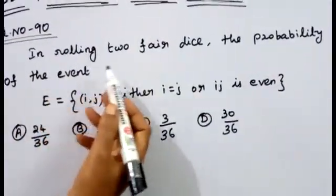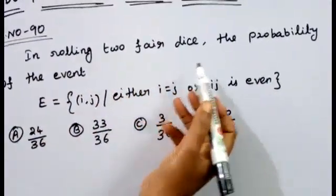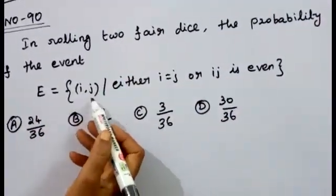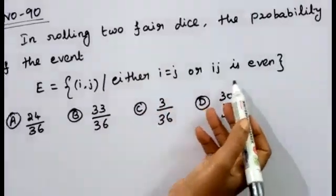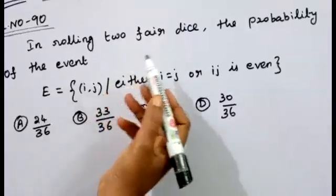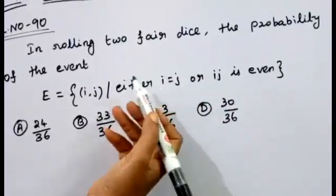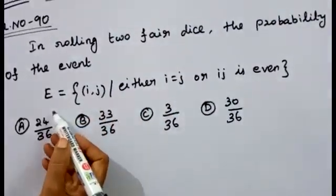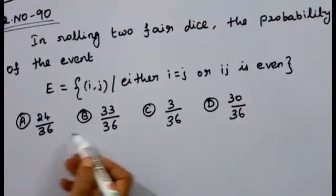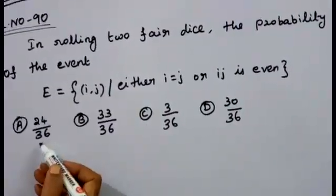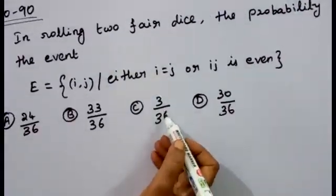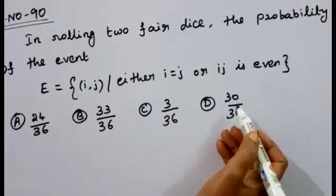In rolling two fair dice, the probability of the event is equal to {(i,j)} such that either i is equal to j or ij is even. We have four options: first option is 24/36, second option is 33/36, third option is 3/36, and last option is 30/36.